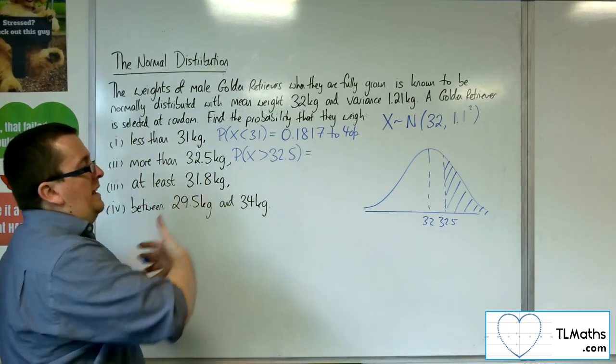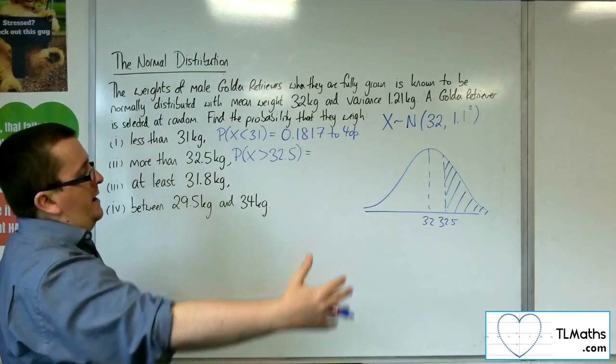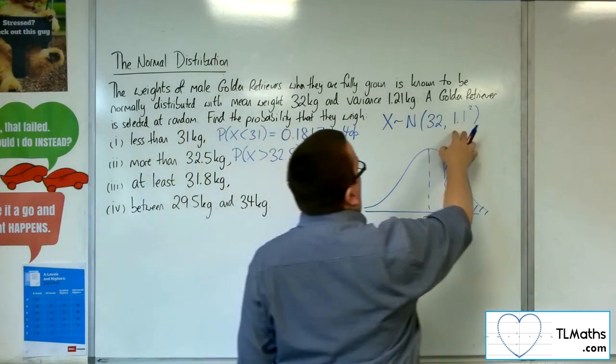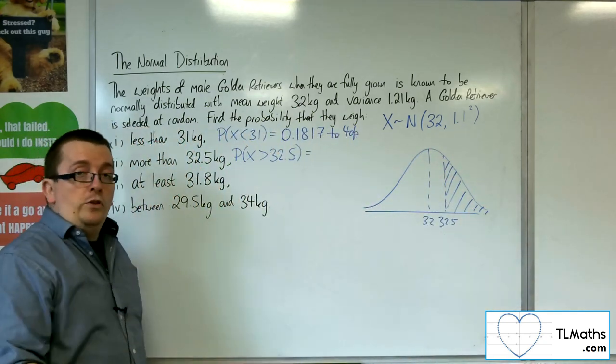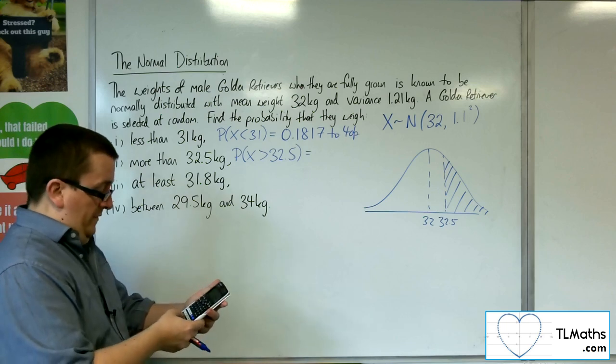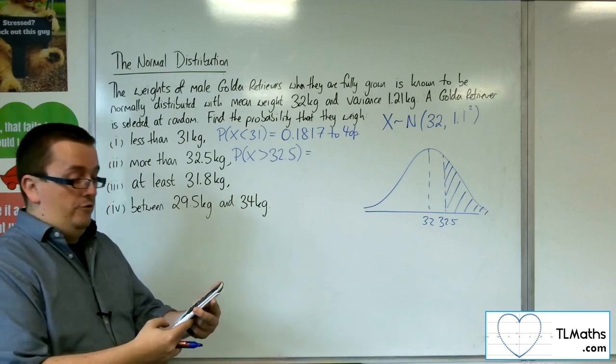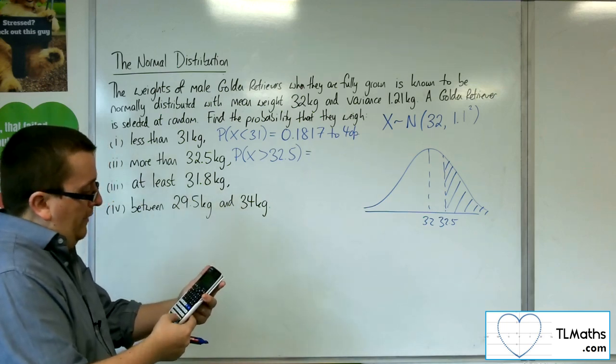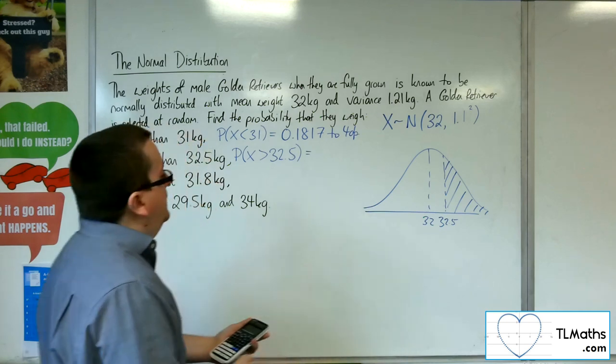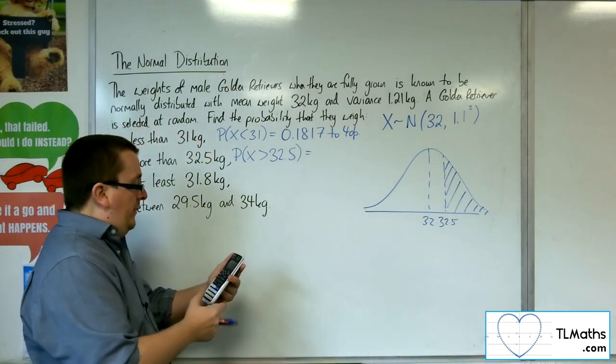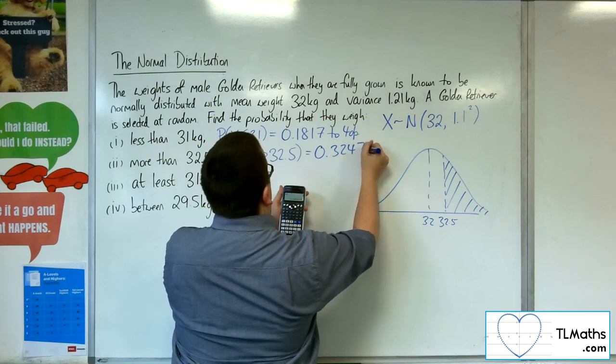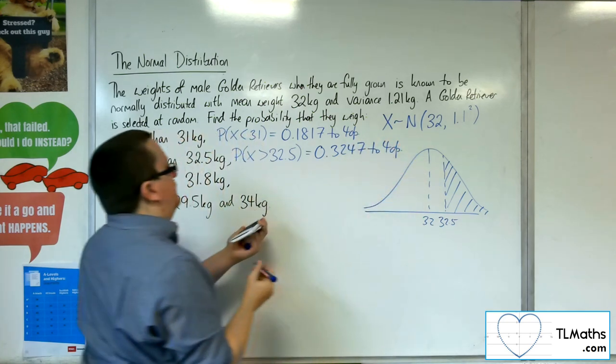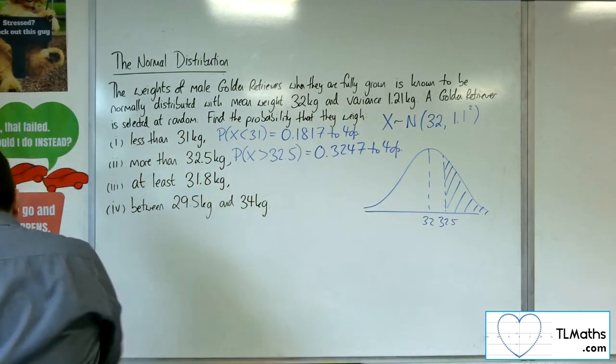On normal CD, my lower this time is going to be the 32.5. The upper value has just got to be far enough away. So 11 on top of 32 would get me to 43. You could use 43, I'm going to just pop in 50. It wouldn't make any difference. You could try some different values, it won't make any difference to the answer. And the sigma and the mean are the same. So we get 0.3247 to four decimal places. So that's number two.